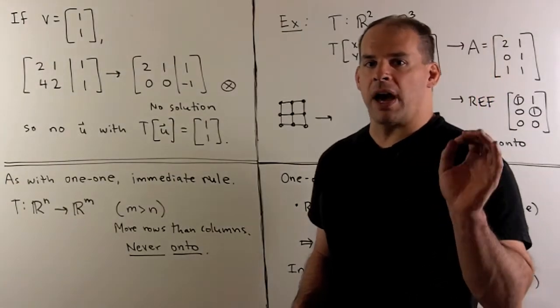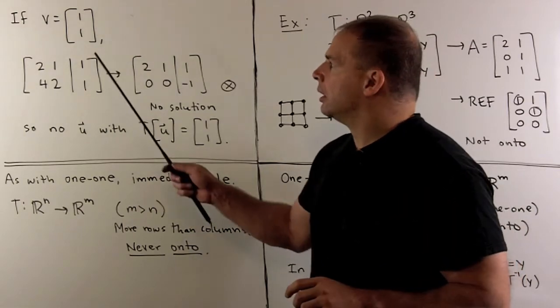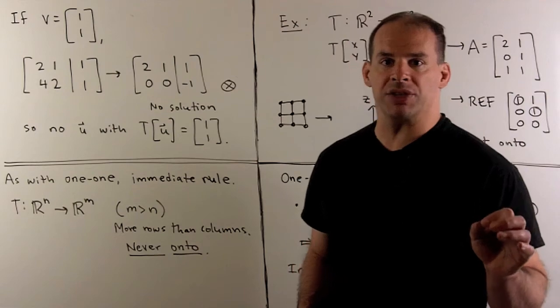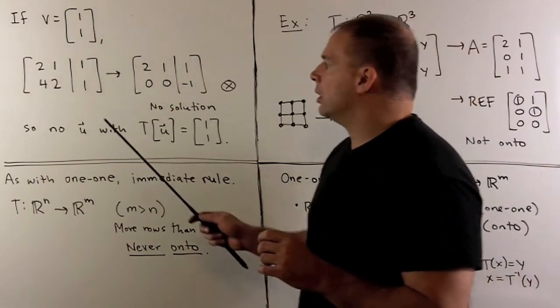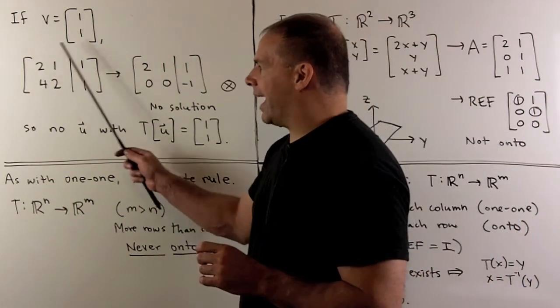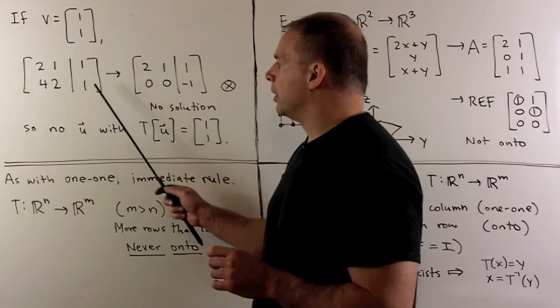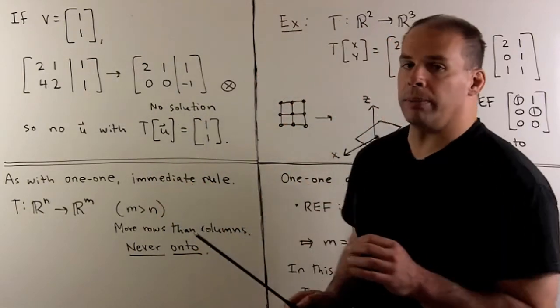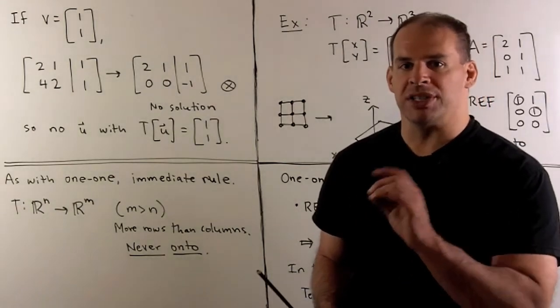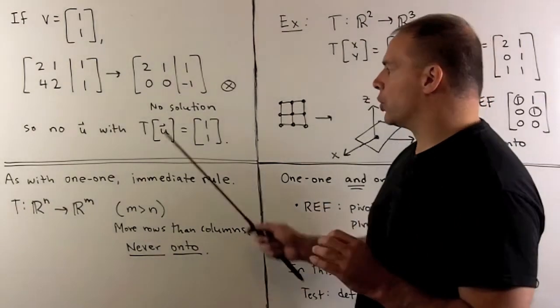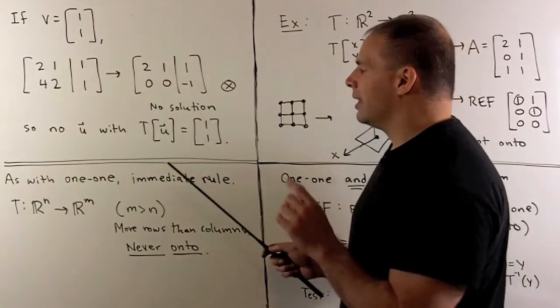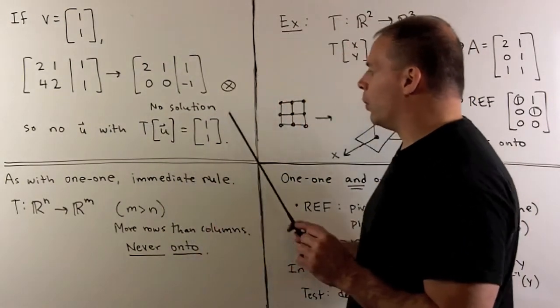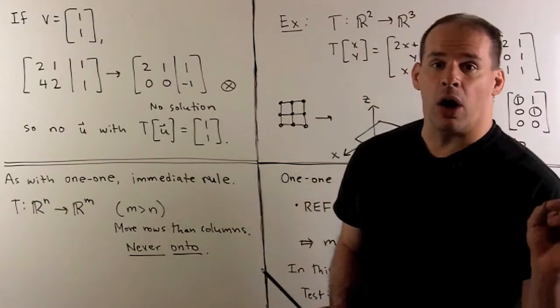To see not onto with computation, we'll show that T never hits the vector 1, 1 in our range space. We set up an augmented matrix. I put A here. We put V here. We row reduce. Then we see we have all zeros and then a minus 1. So the system of linear equations is inconsistent, which means there's no solution. That means there's no U in our domain, such that T of U is equal to 1, 1. So not onto.